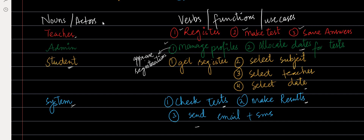So these are the use cases we have identified. After identifying these use cases, we can actually make the diagram for them. Now we are going to make the use case diagram for the same use cases.